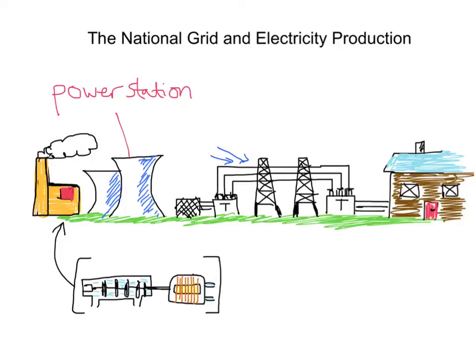Let's just go through it again. We've got the power station where we're burning fuels. Burning the fuel boils water to make steam, and the steam makes a turbine spin. As it spins, that action turns a generator which produces electricity. So we boil water into steam, steam turns a turbine, and that powers the generator, producing electricity.